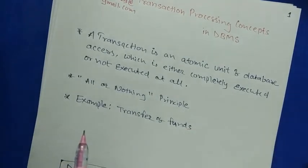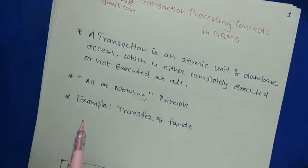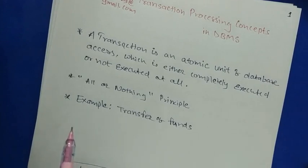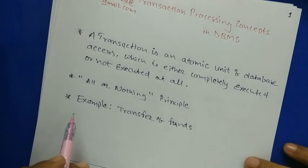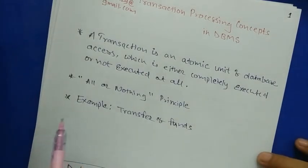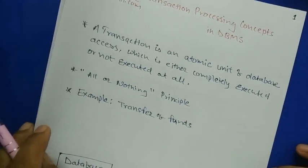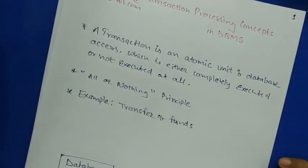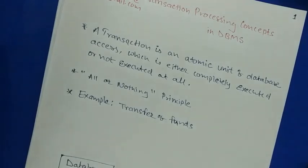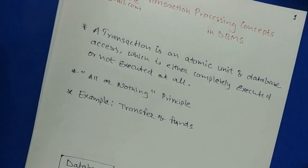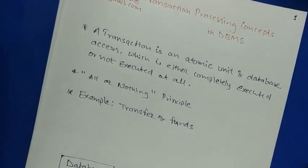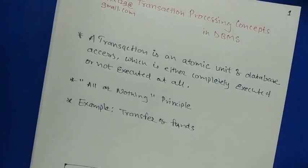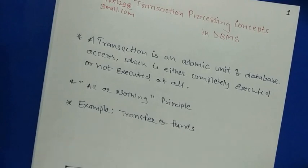There are several examples of transactions, like transfer of funds from one account to another account, booking a ticket — a movie ticket or a railway reservation ticket. It will either book or not book; there are only two cases. Typically, the database stores data of interest and we have applications trying to access and modify that stored data.